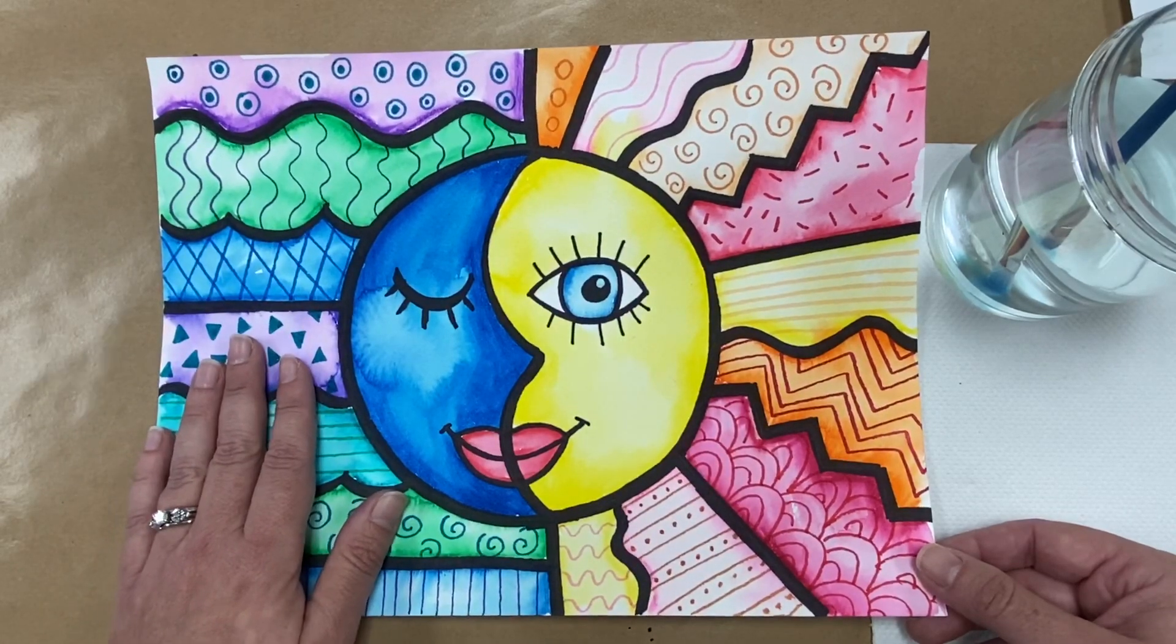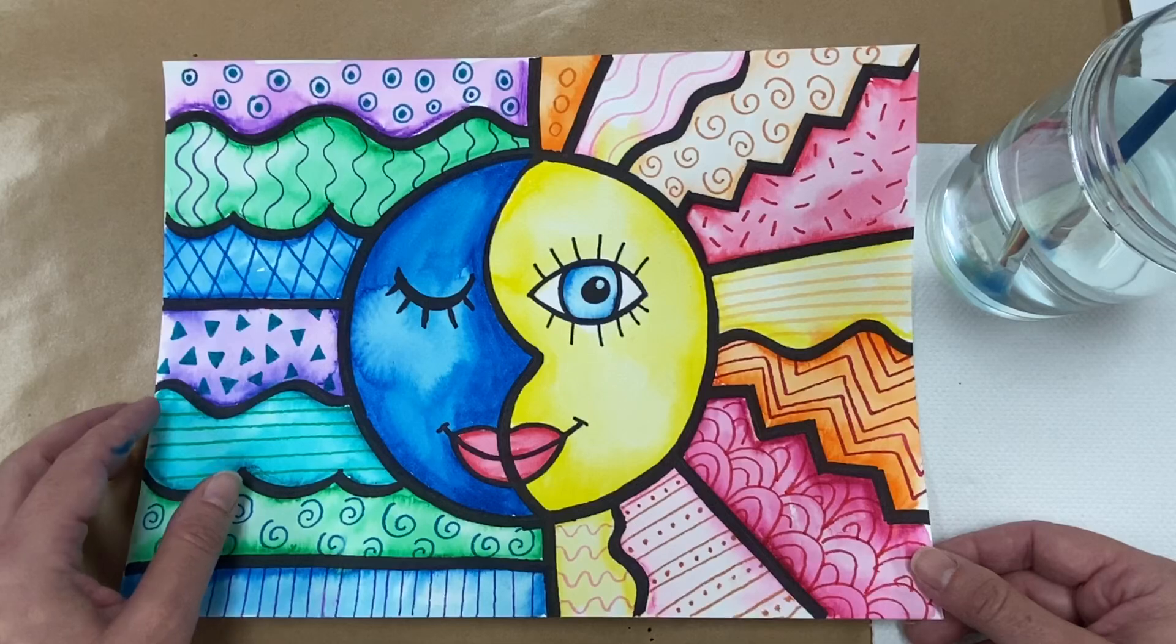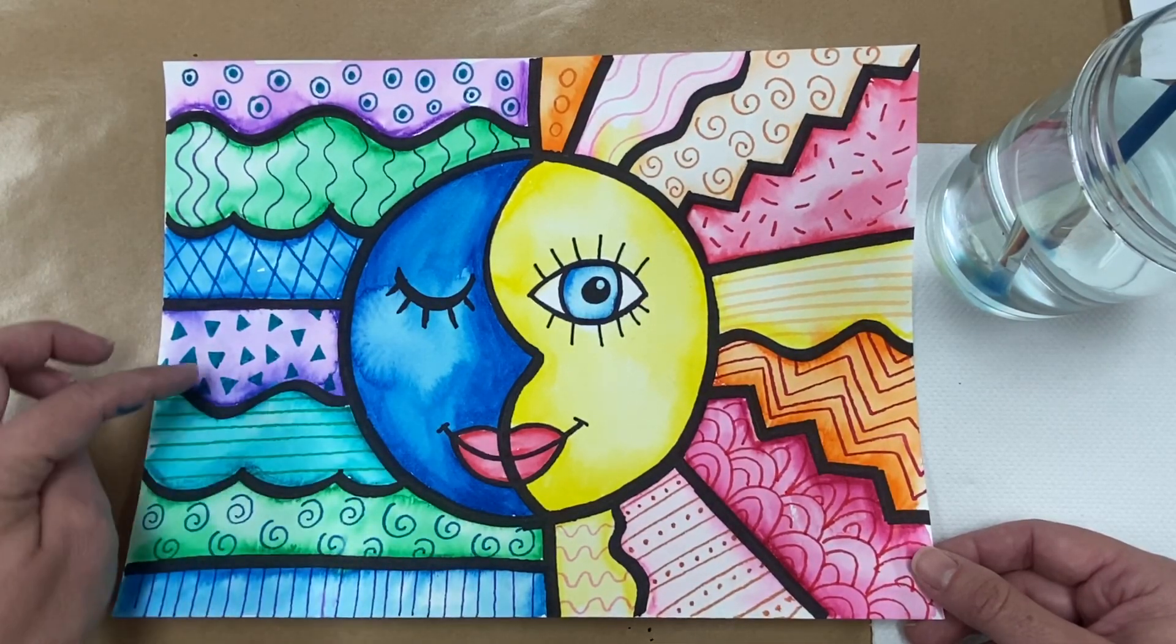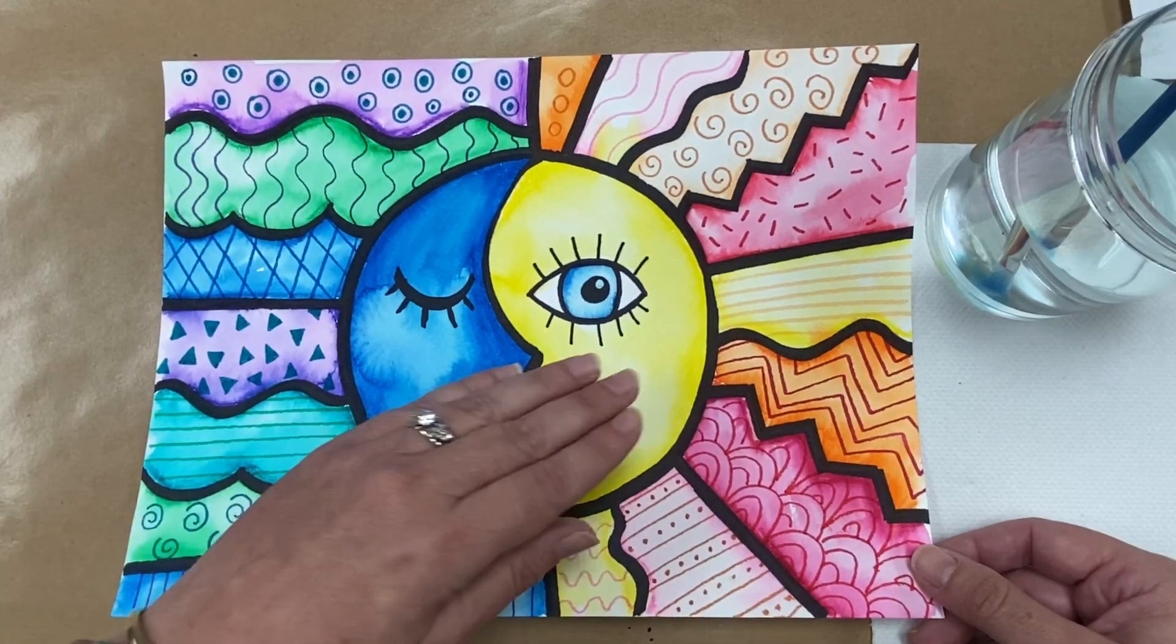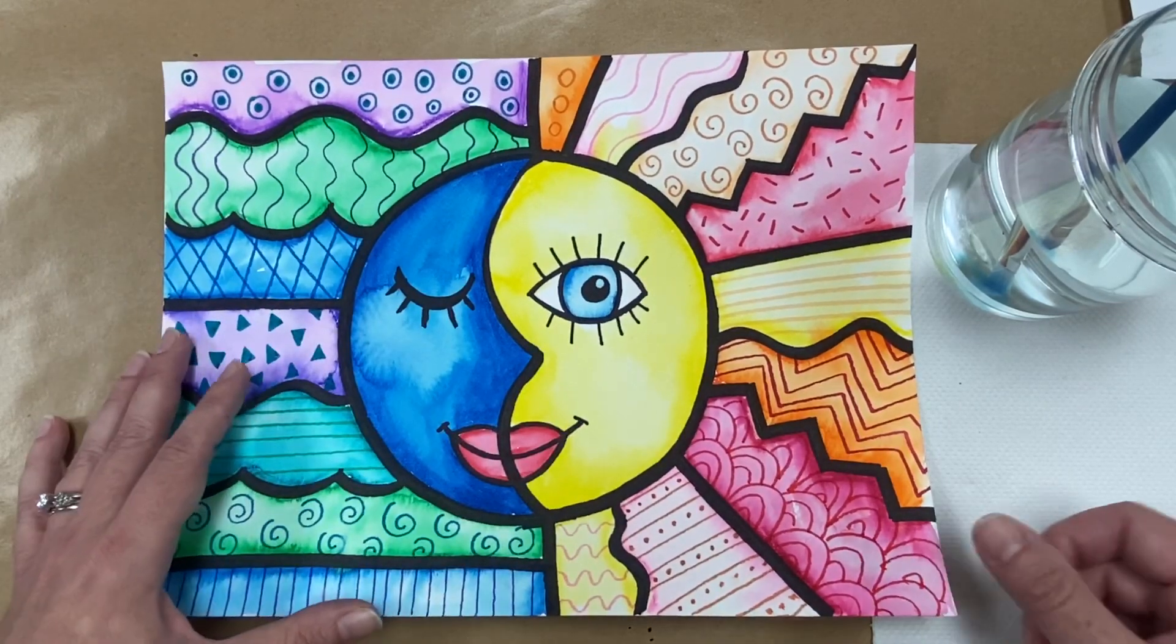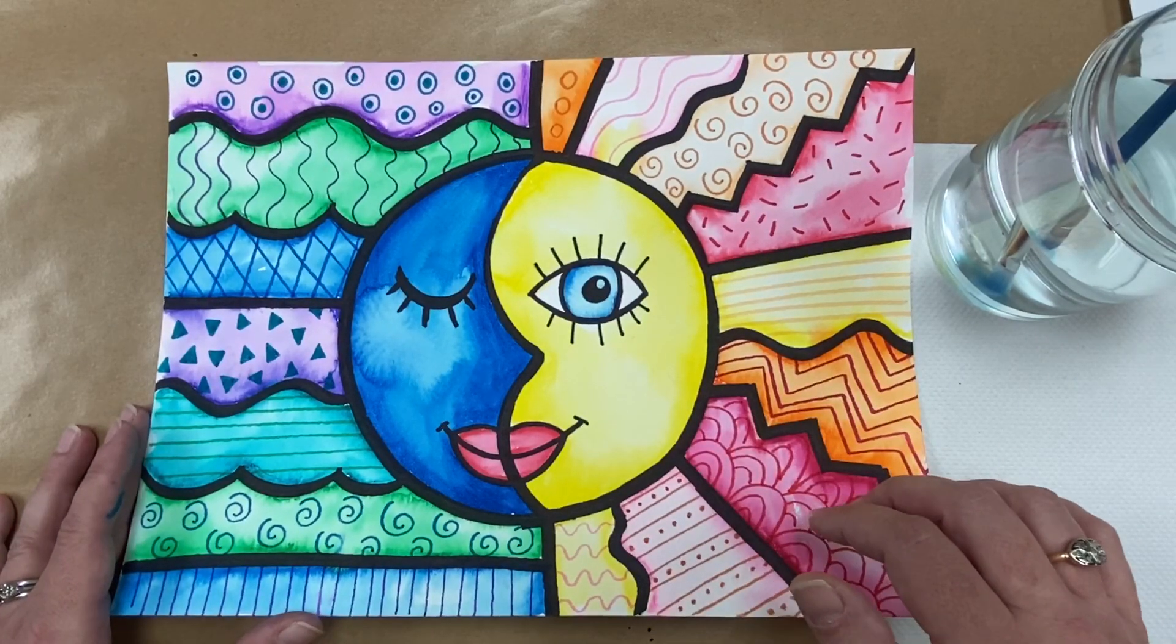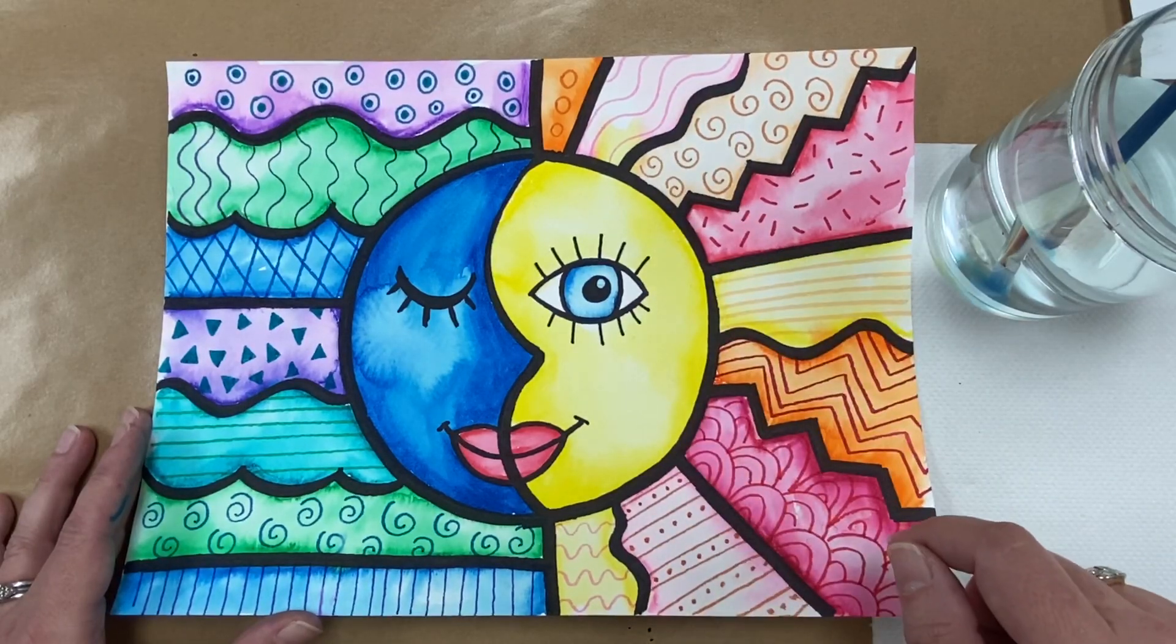Cool colors are colors that remind us of things that are cool or cold like ice and snow. And so when we think of those cool colors we think of things that are blue or green or purple and all the different shades of those colors. And then warm colors remind us of things that are hot or warm like the sun or like fire. You think of yellows and oranges and reds and even pink. Those are warm colors.